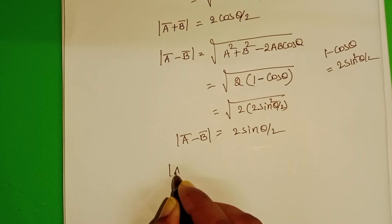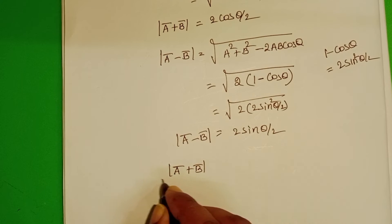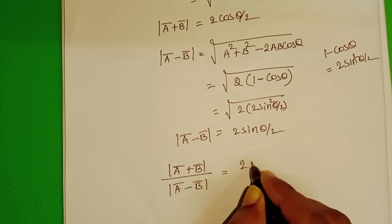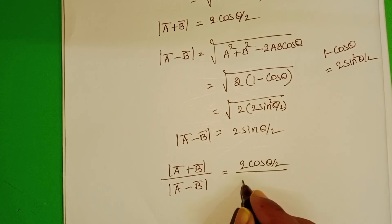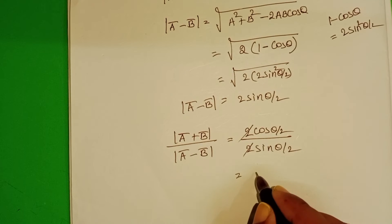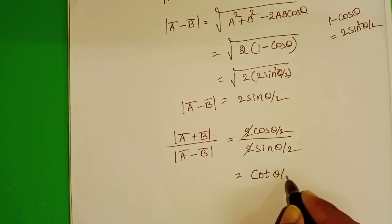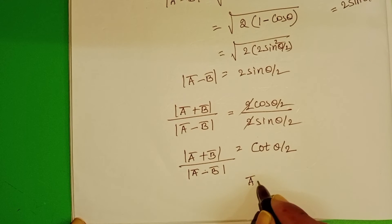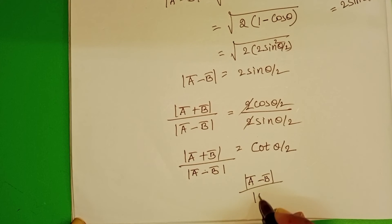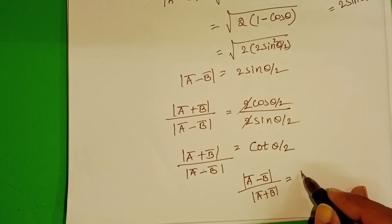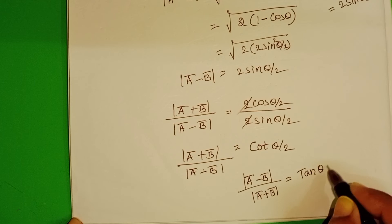Take the ratio of these two: mod(a bar plus b bar) by mod(a bar minus b bar) equals 2 cos(theta/2) divided by 2 sin(theta/2). Here 2 gets cancelled, giving cos(theta/2) by sin(theta/2), which equals cot(theta/2). But the given options are in tan, so take the reciprocal: mod(a bar minus b bar) by mod(a bar plus b bar) equals 1 by cot(theta/2), which equals tan(theta/2).